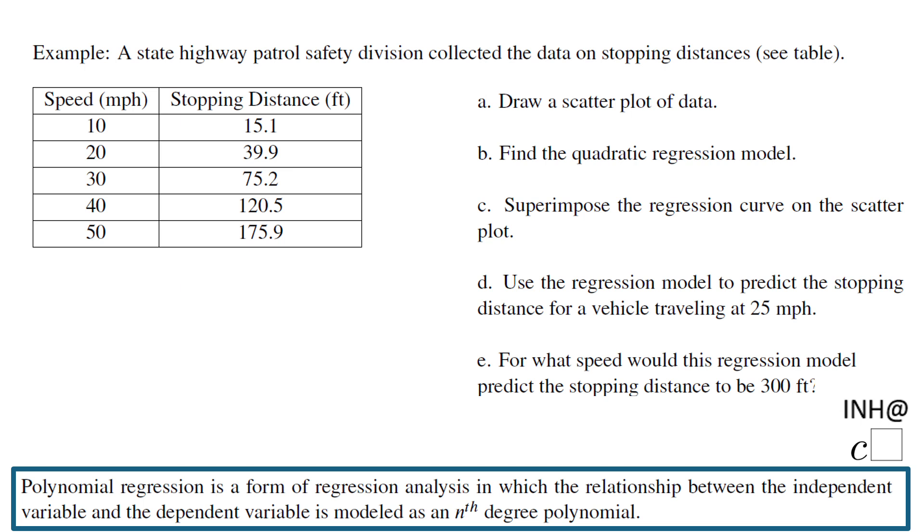Welcome back at C-square. In this example we will do what is called a polynomial regression. This table shows us the speed as x - 10, 20, 30, 40, 50 - and the stopping distance as y.